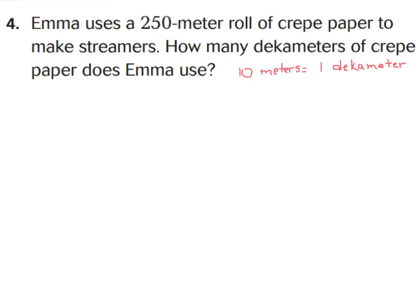Let's take a look at number 4. Number 4 says, Emma uses a 250-meter roll of crepe paper to make streamers. How many decameters of crepe paper does Emma use? Now, I've given you a little help here to tell you that 10 meters equals 1 decameter. So if 10 meters equals 1 decameter, and we want to know if she uses 250 meters, how many decameters would that be? We need to remember that meters are smaller than decameters. Whenever you go from a smaller measurement to a larger measurement, you're going to divide. So we have 250 meters, and we have how many decameters? If you want to try this one all by yourself and work it out, go ahead and press pause now, so that way you can try to see if you can get it before I show you.